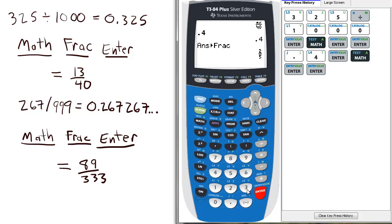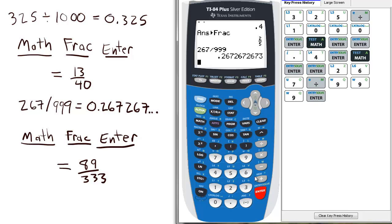Lastly, for a repeating decimal, let's take 267 divided by 999, and we get this repeating decimal, 0.267.